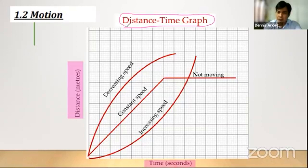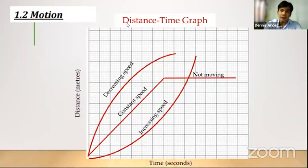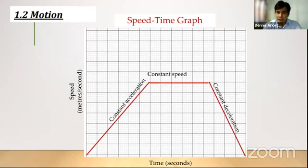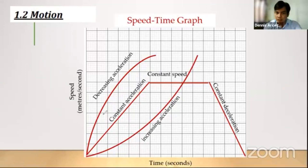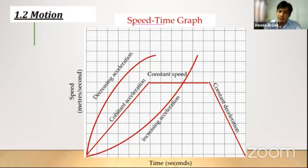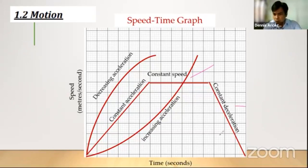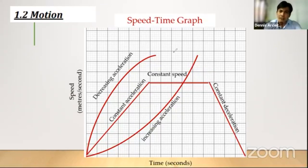For a speed-time graph, the lines look almost the same but the interpretation is different. In a speed-time graph, a straight line means constant acceleration. Students usually write 'constant speed' because they are not mindful of the graph title. A straight line going up means constant acceleration; a horizontal line means constant speed; a line going down means constant deceleration; an increasing gradient means increasing acceleration; and a decreasing gradient means decreasing acceleration.